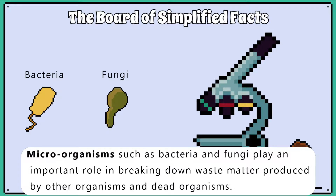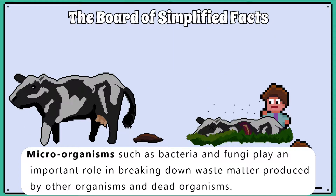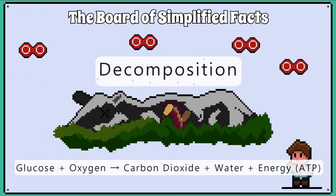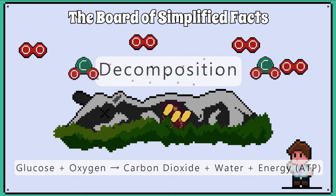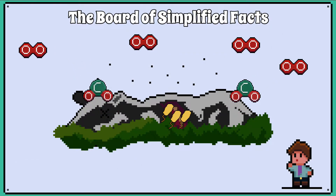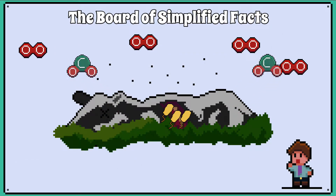Microorganisms such as bacteria and fungi play an important role in breaking down waste matter produced by other organisms and dead organisms. This process of decomposition, when oxygen is available to the microorganism, releases carbon dioxide into the atmosphere via aerobic respiration. The microorganisms do this so they can grow and reproduce.